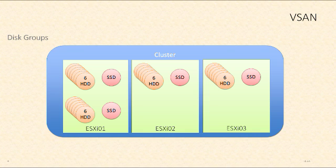On our ESXi hosts, we'll organize storage into something called disk groups. Within the disk groups, we're going to have persistent storage. Typically there are up to six hard disk drives — a maximum of six capacity devices per disk group — and a single flash device, in this case an SSD. Host ESXi 01 happens to have two disk groups, and each disk group has persistent storage in the form of hard disk drives, as well as read cache and write buffer in the form of solid state drives.